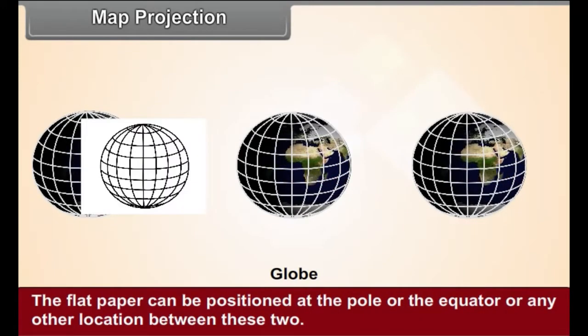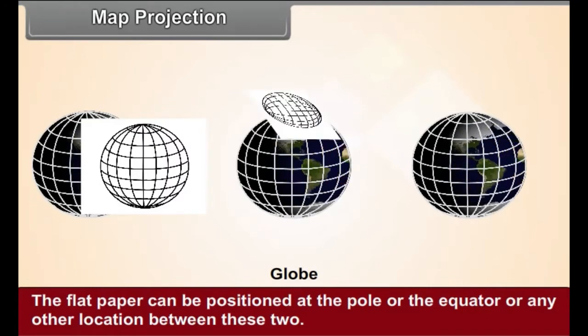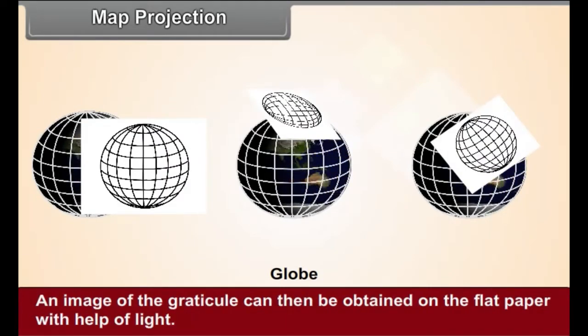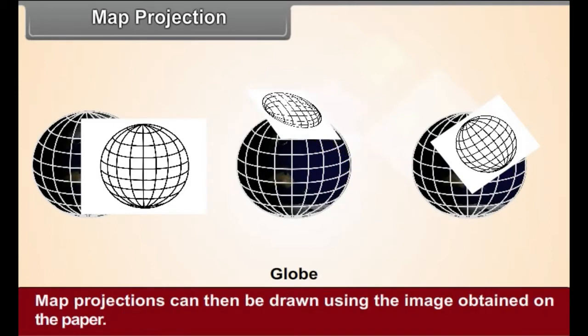The flat paper can be positioned at the pole or the equator or any other location between these two. An image of the graticule can then be obtained on the flat paper with the help of light. Map projections can then be drawn using the image obtained on the paper.